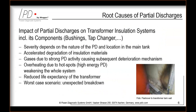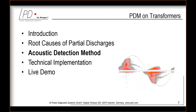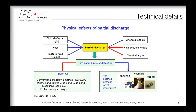The impact of partial discharges on transformer insulation systems — including components such as bushings and tap changers — depends on the severity and location. Effects include accelerated degradation of insulation materials, gassing causing subsequent deterioration, overheating from hot spots with high-energy PD, and a generally reduced life expectancy. The worst-case scenario is always an unexpected breakdown.